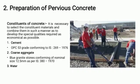Now we will see how to prepare pervious concrete. It mainly consists of three constituents: cement, coarse aggregate, and water. We use OPC 53 grade cement because we need early strength, and for coarse aggregate we use blue granite stone of 12.5 mm because it gives the required void content.